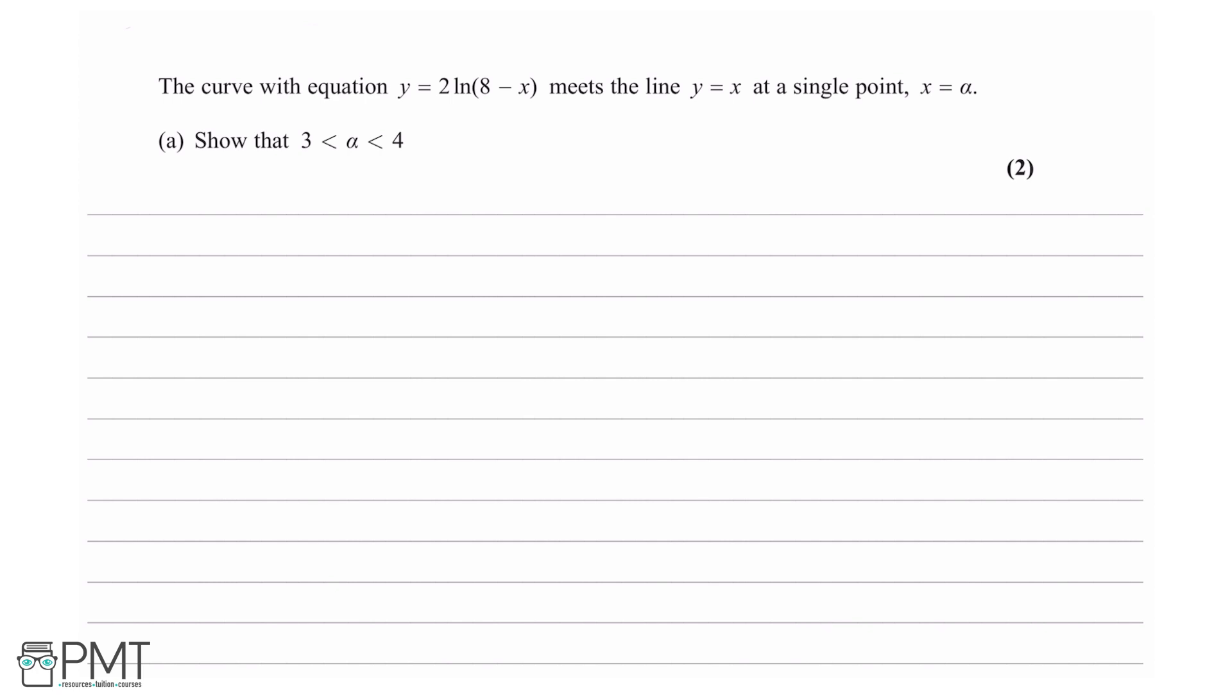The first thing we need to do is come up with some function which represents the point of intersection. At the point of intersection, the x and y coordinates are the same, so we can set the y coordinates equal: 2ln(8 - x) equals x. The point of intersection will be where 2ln(8 - x) minus x equals 0. I'm going to let this expression equal f(x), so f(x) equals 2ln(8 - x) minus x.